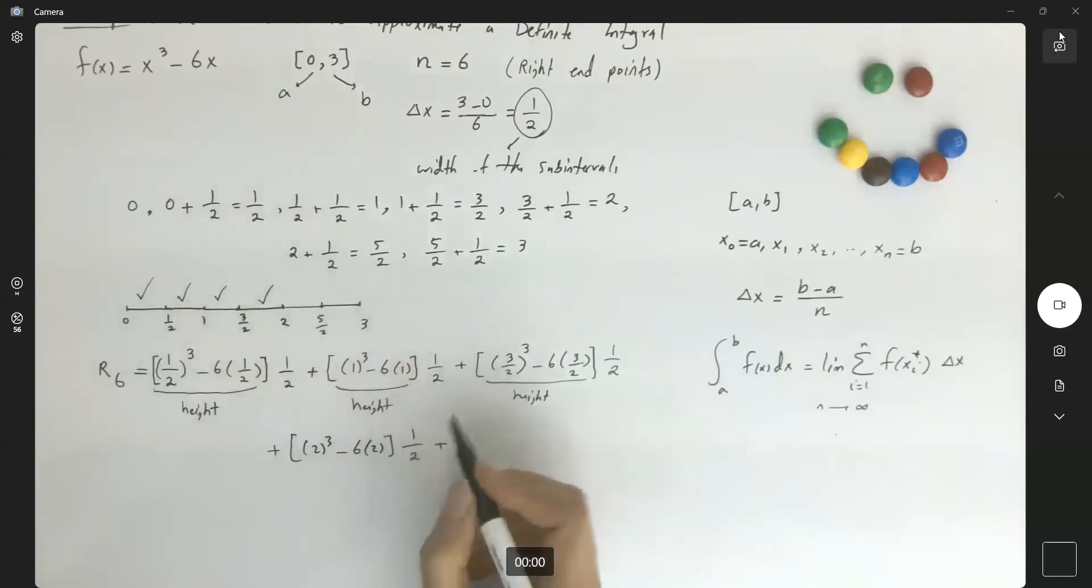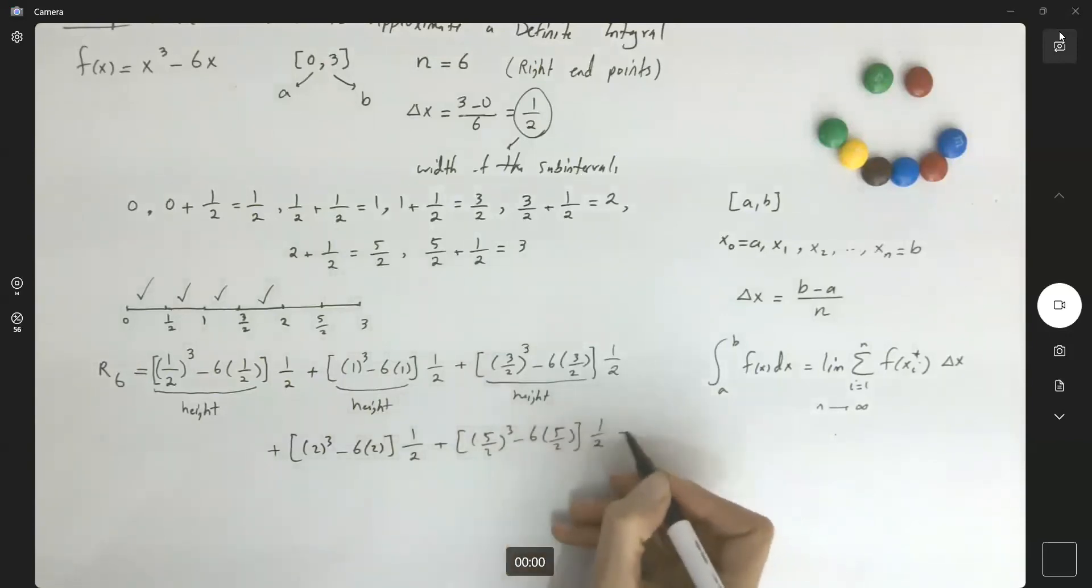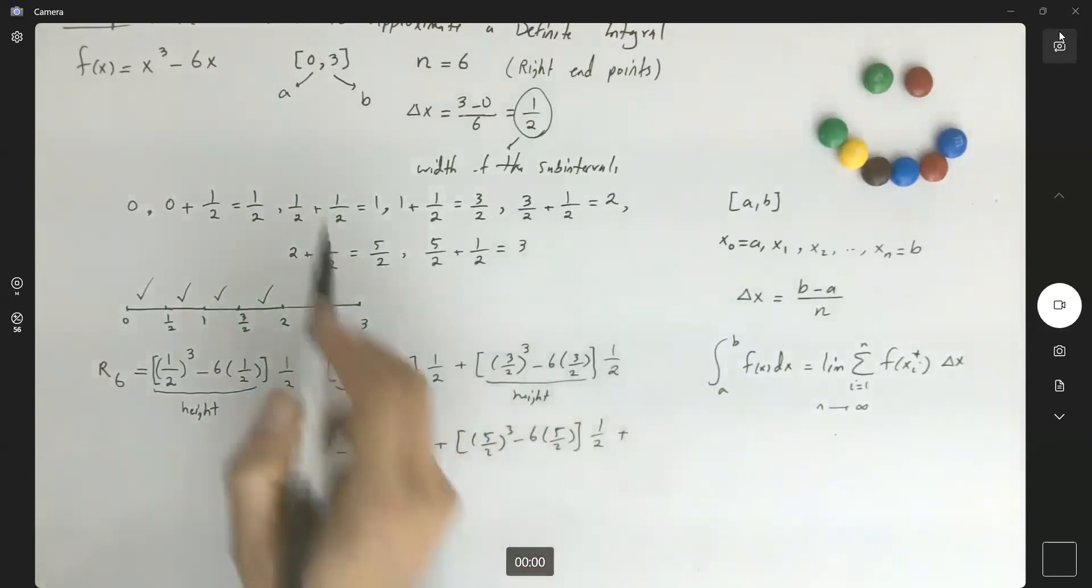Now 5 halves. 5 halves to the third minus 6 times 5 halves, plus. And the last one, plus. And the last one is going to have the right endpoint, which is 3.